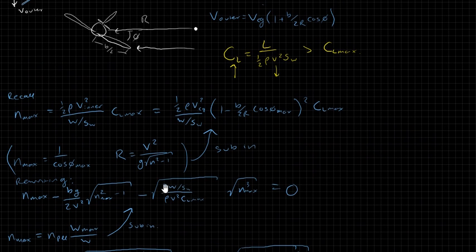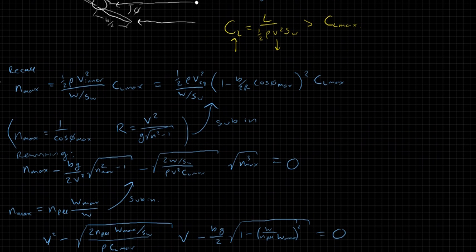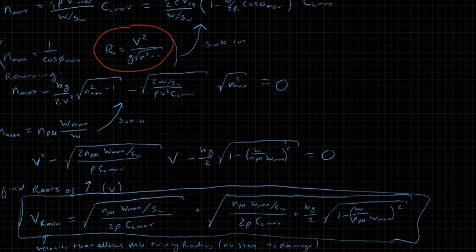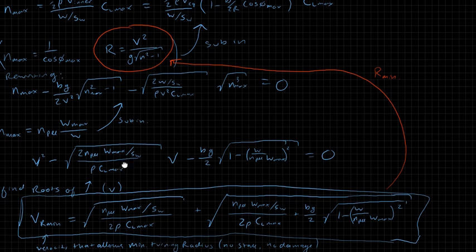And of course if you want to find that minimum turning radius you just plug this back in up into this. So if you plug this velocity down here back in to there, then that will give you your minimum turning radius allowable. Okay.